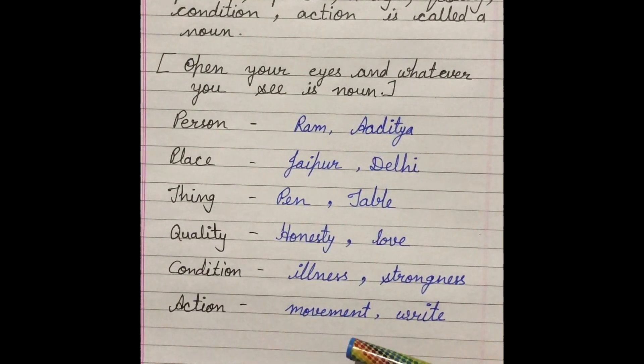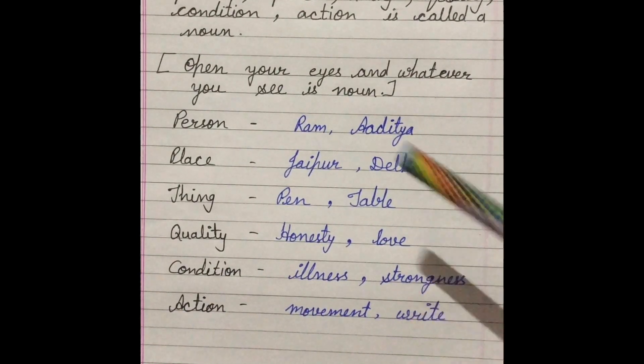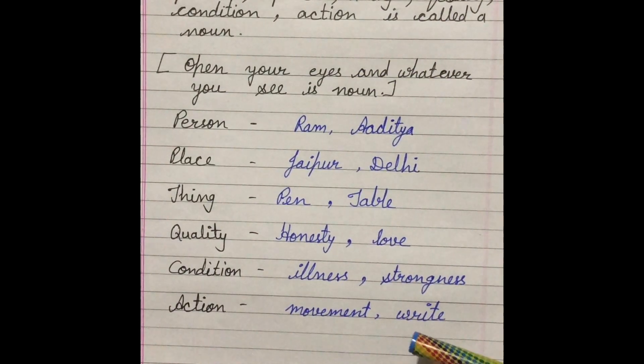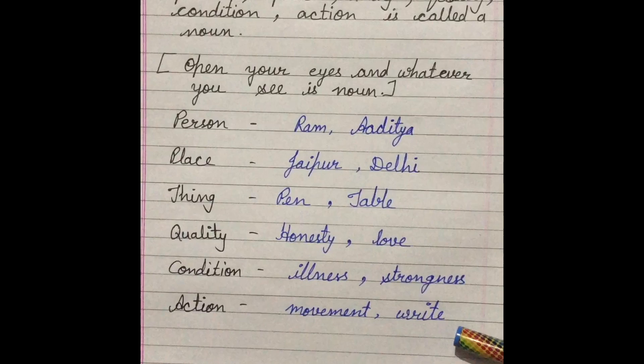And action like movement and write. If actions are used as a subject, then these are called a noun. Not always because as we know, write is a verb also, but when we use it as a subject, then this is called a noun.